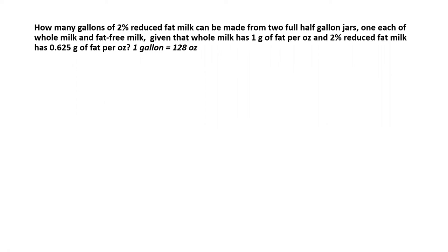The question is: how many gallons of 2% reduced fat milk can be made from two full half-gallon jars, one each of whole milk and fat-free milk? We are given that whole milk has 1 gram of fat per ounce, and 2% reduced fat milk has 0.625 gram of fat per ounce. We are also given that one gallon equals 128 ounces.